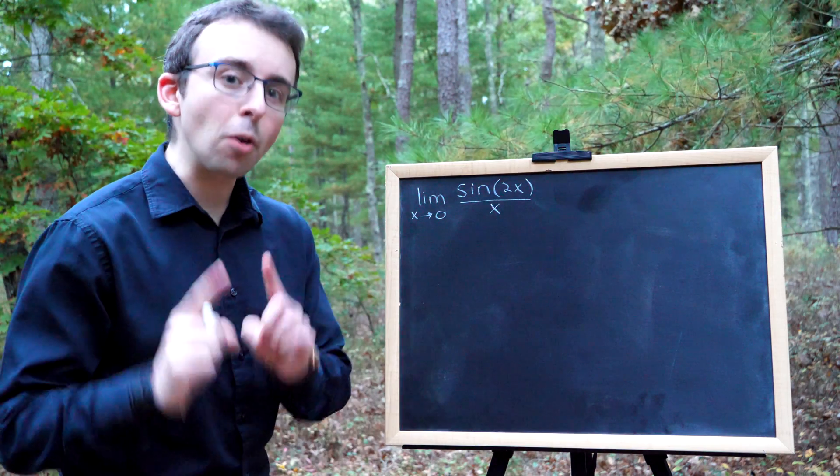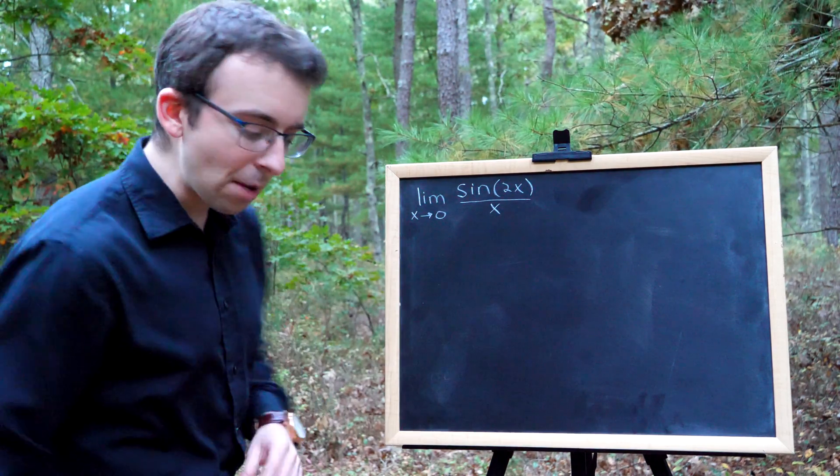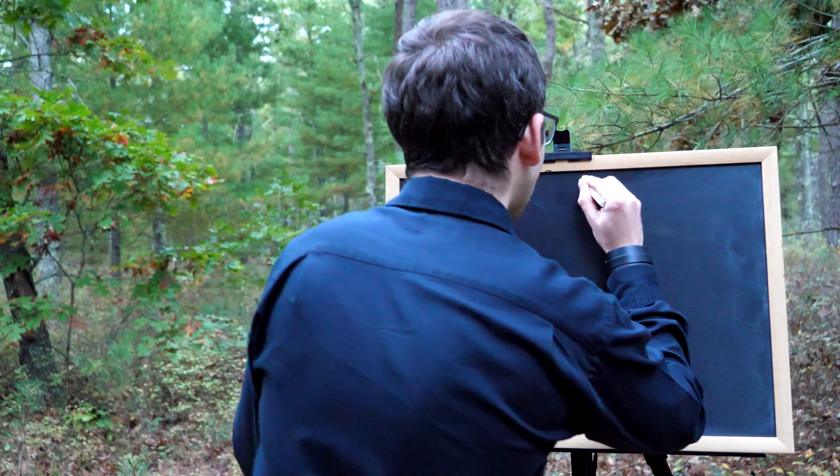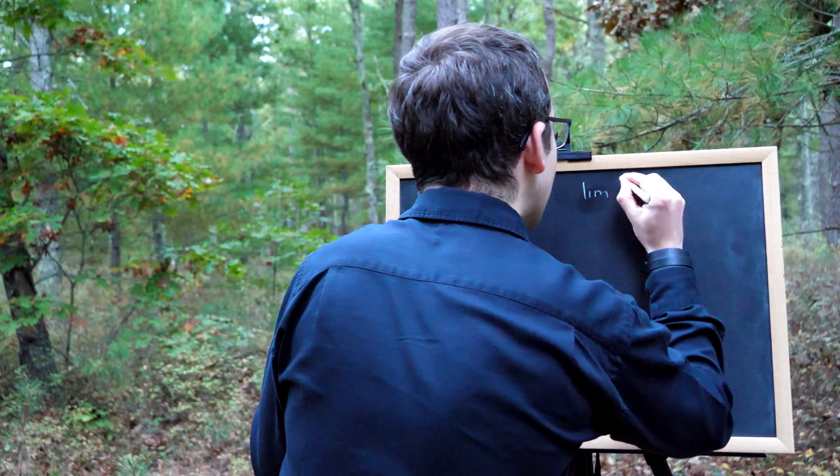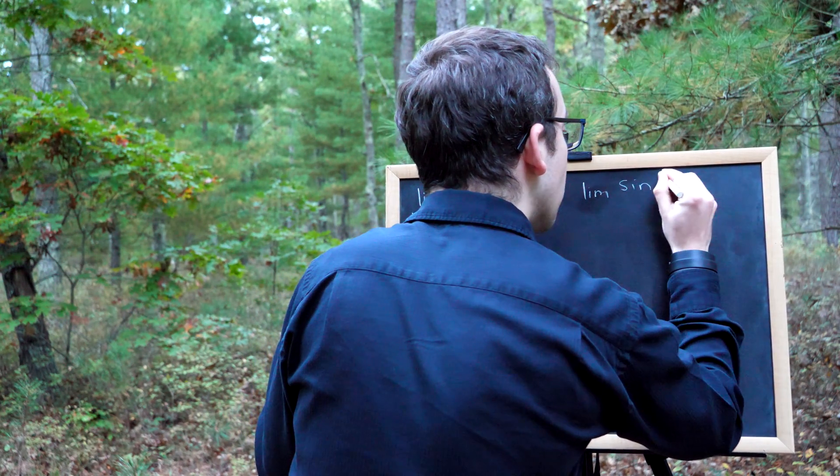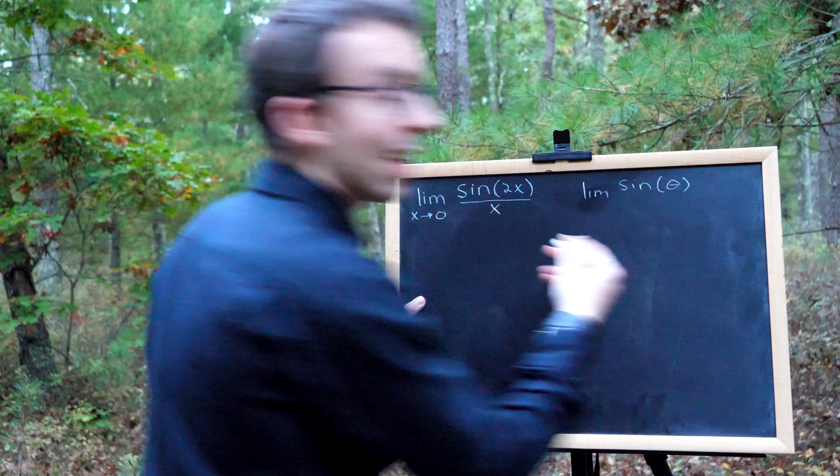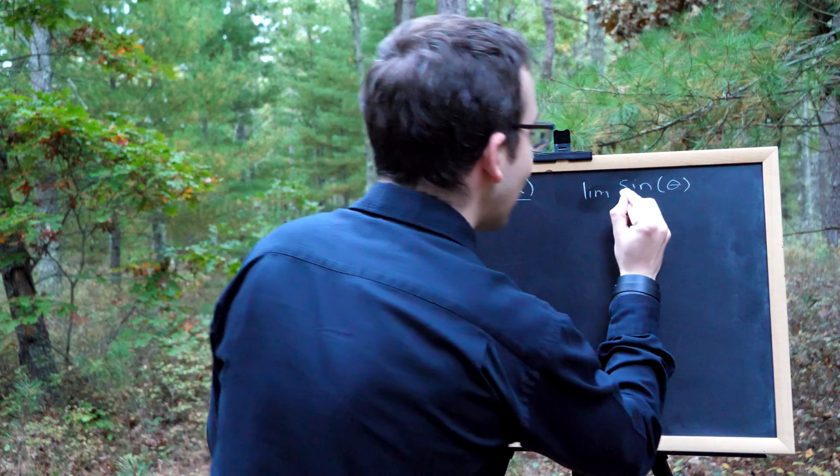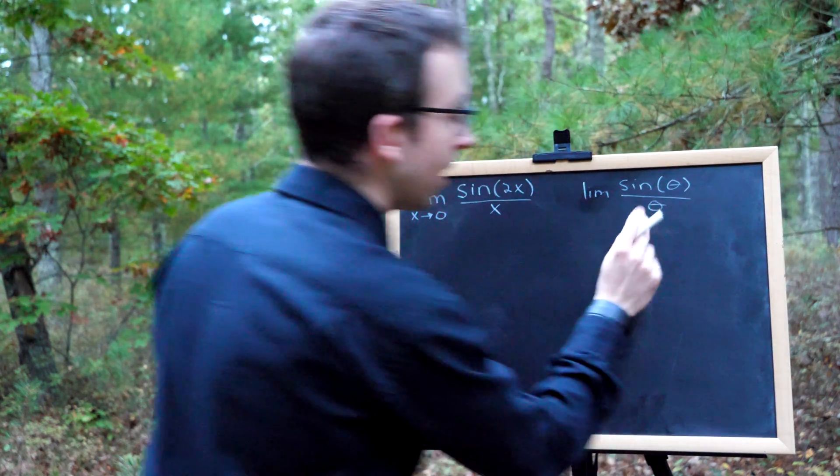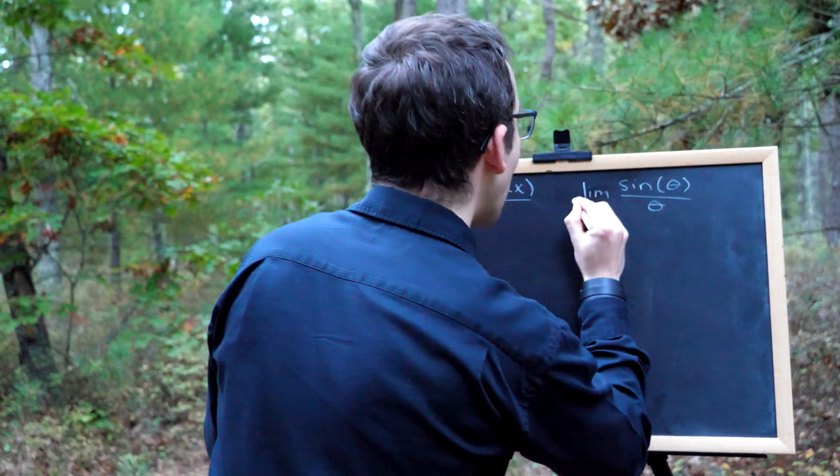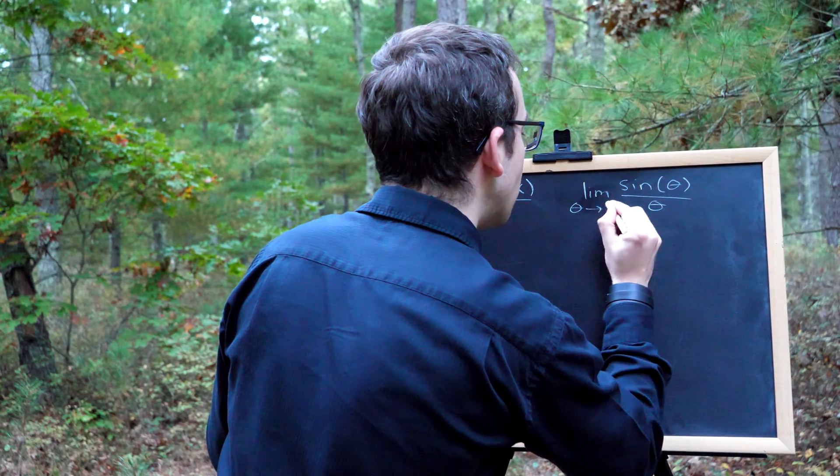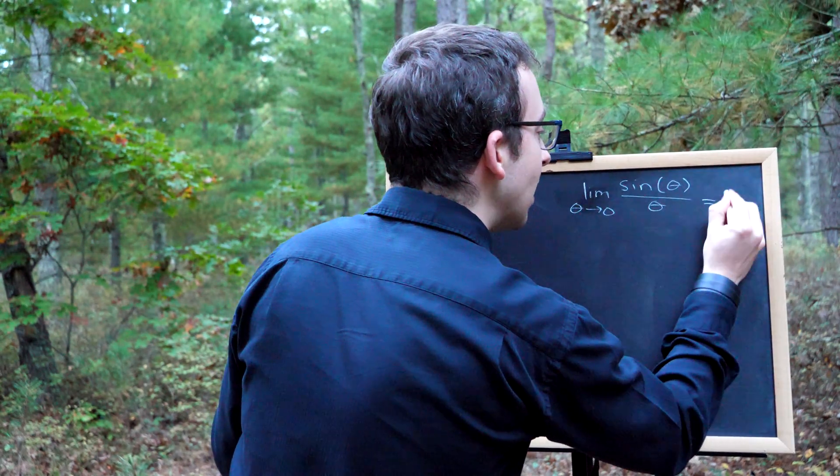So what you have to remember is this fundamental trigonometric limit, that the limit of sine of a thing, let's say theta, the limit of that over theta, the thing in the sine function, as theta approaches 0, this is equal to 1.